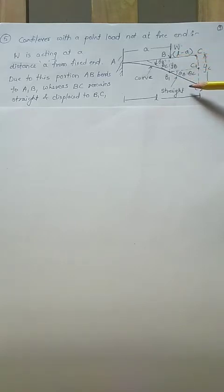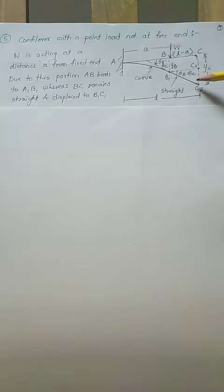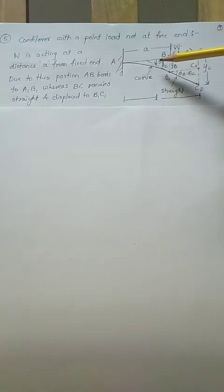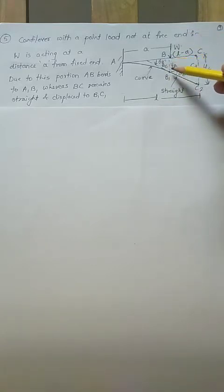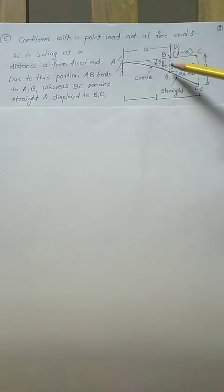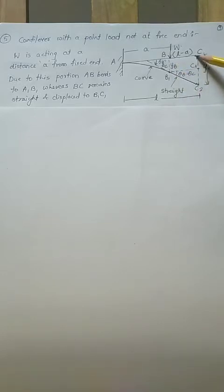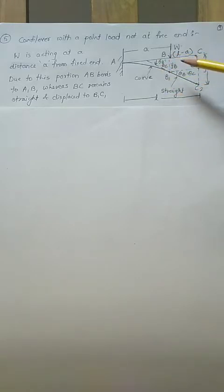Since part BC is straight, it will just move its position. If we draw a tangent, it will be in line with this straight portion, giving theta_p. There is only one theta here - theta at B and theta at C are the same because it is the same straight line being extended. You will get two deflections: under the load at B it is y_b, and at C it is y_c. y_c is greater than y_b, and the extra amount corresponds to the triangle portion, where CC1 is equal to y_b.